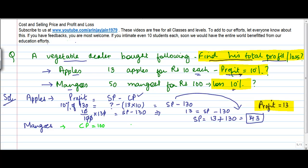And my loss is equal to 10 percent. So therefore my loss is equal to how much? 10 upon 100 into 100 is equal to 10. This 100 gets knocked off with this, so the loss on mangoes is 10.